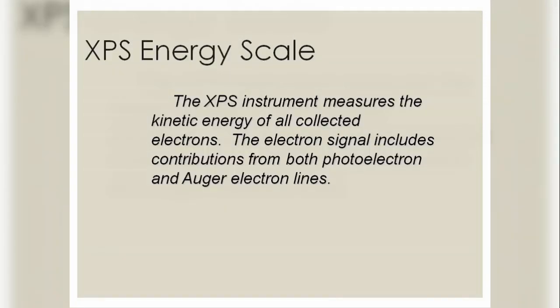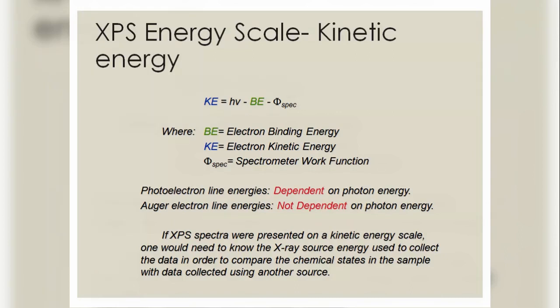So the XPS energy scale. The XPS instrument measures the kinetic energy of all the photoelectrons. The electron signal includes contribution from both photoelectrons. In this case we are going to study about kinetic energy: KE = hν - BE - φ_spec where φ_spec is the spectrometer work function.